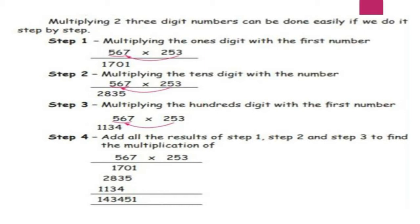Step 2: The next number we are going to multiply. From the 5, we are going to multiply. 5 sevens are 35, carry over 3. 5 sixes are 30, plus 3 is 33, carry over 3. 5 fives are 25, plus 3 is 28. So we got the answer 2835.